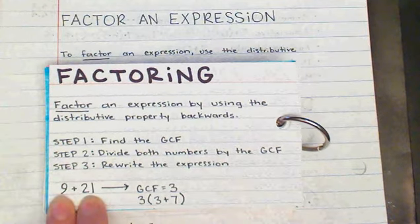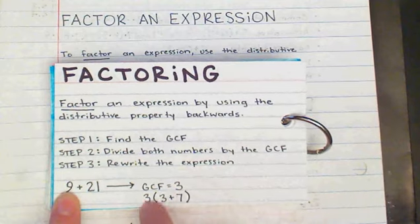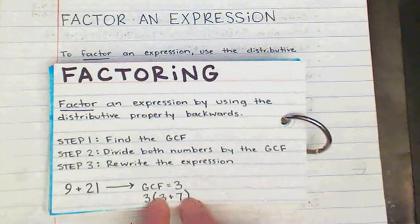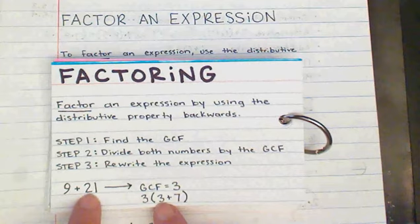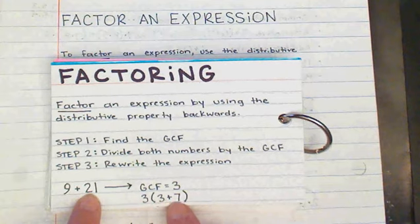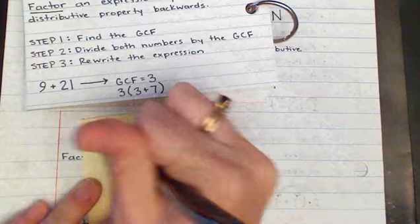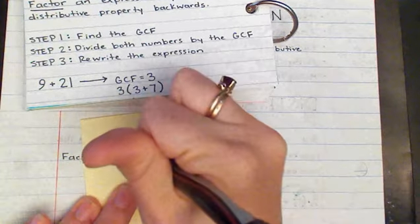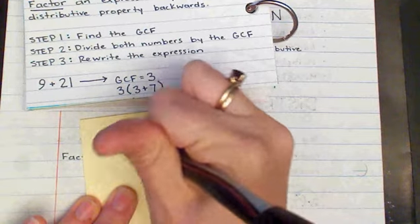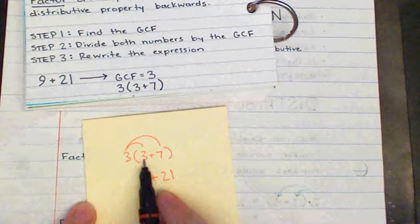For example, 9 plus 21: the greatest common factor is 3. I divide both by 3 — 9 divided by 3 is 3, and 21 divided by 3 is 7 — giving 3(3 plus 7). We can double-check by using the distributive property: 3 times 3 is 9, plus 3 times 7 is 21. We arrived back at the original expression, so I factored it correctly.